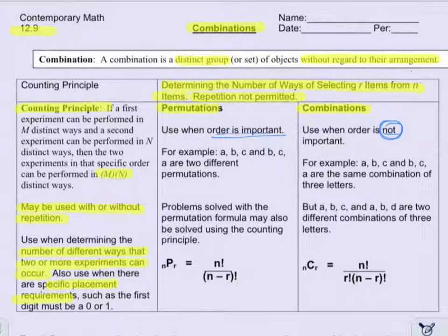For example, in a permutation, ABC and BCA are different permutations. But in a combination, ABC and BCA are the same combination of three letters.